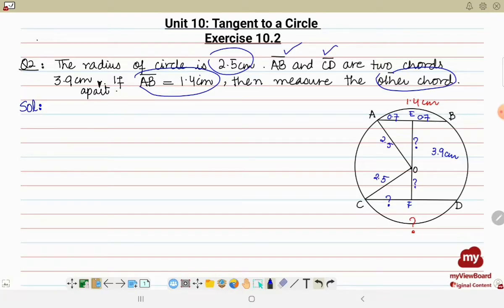So we will consider the first triangle. Let's say, consider triangle OEA. If you see, triangle OEA is a right angle triangle and we can apply the Pythagoras theorem, which says that hypotenuse square is equal to base square plus perpendicular square.